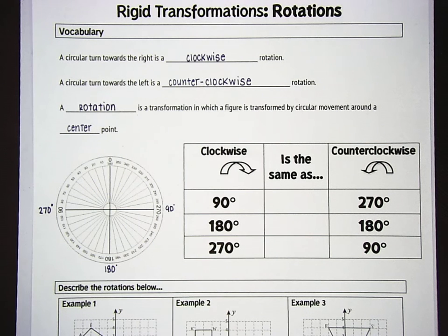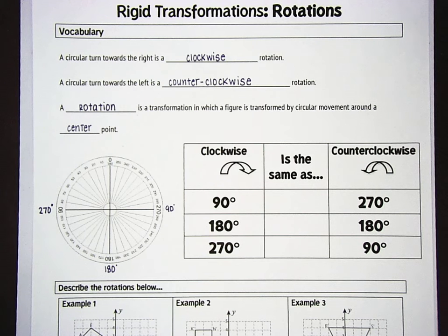What's up guys? Mr. Litto again. Let's take a look at some rotations. A circular turn towards the right is going to be considered a clockwise rotation, and a circular turn towards the left is considered a counterclockwise rotation, much like time would work on a clock.